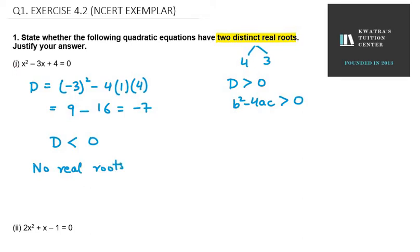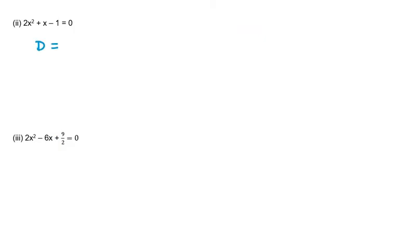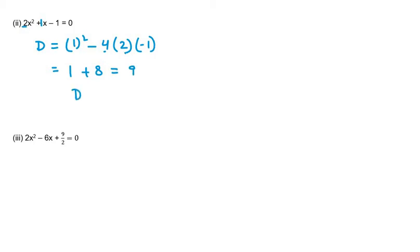Let's try the second one. D equals b squared minus 4ac. Here b is 1, a is 2, and c is minus 1. So we get 1 minus 4 times 2 times minus 1, which is 1 minus negative 8, giving us 9. D is greater than 0, which means the equation has two distinct real roots.